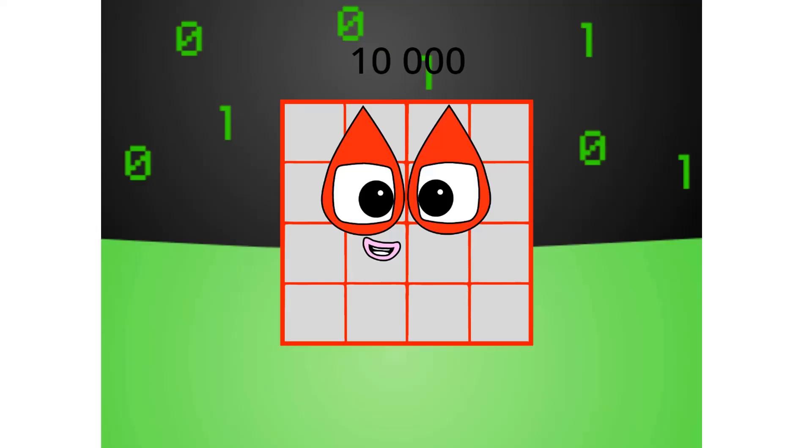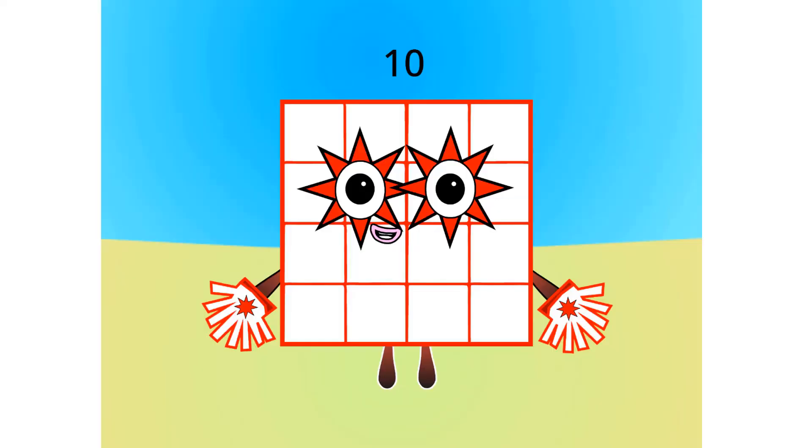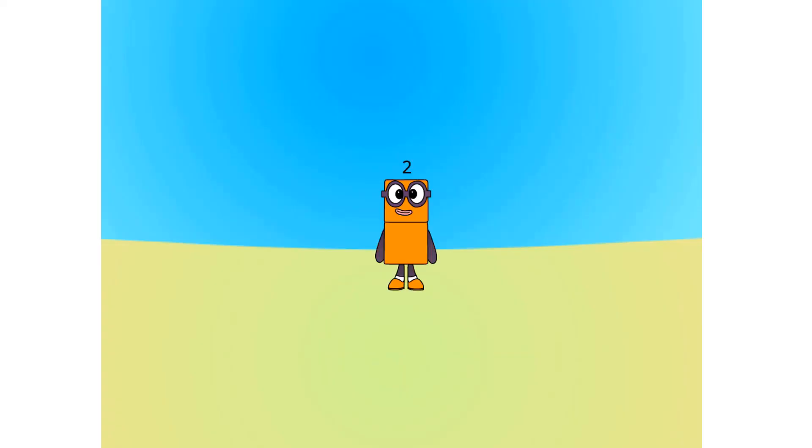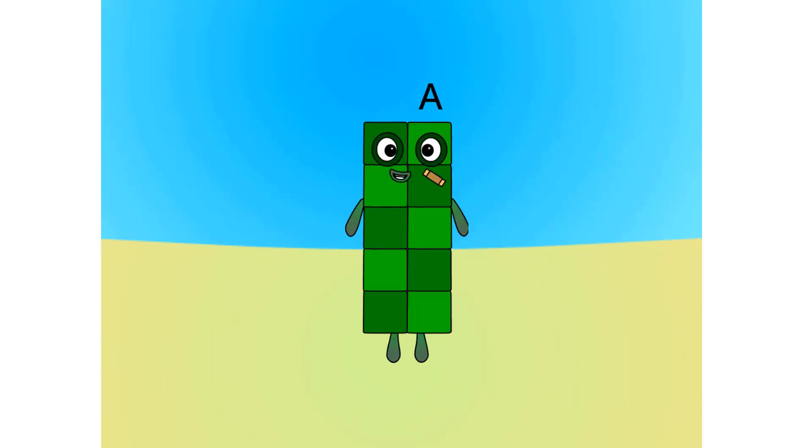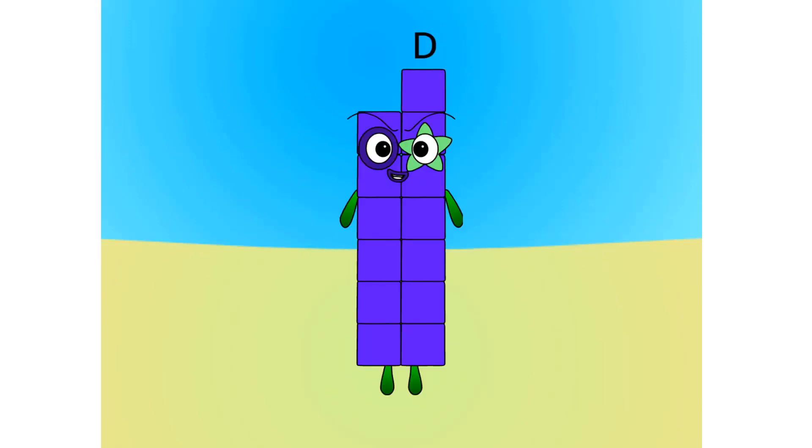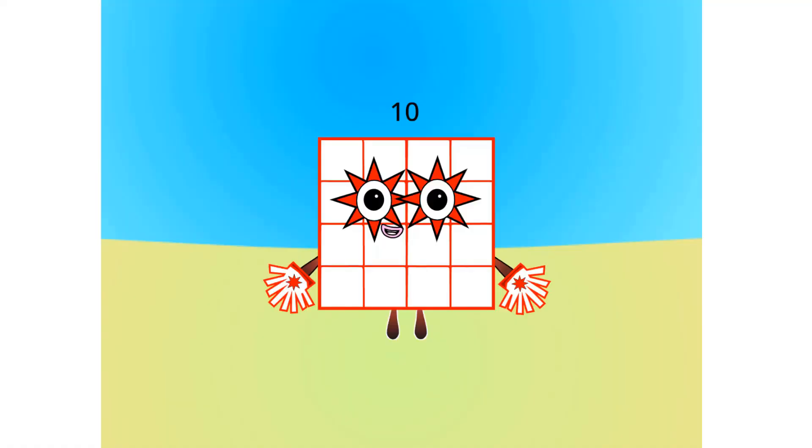Let's move on to the next base. This is base 16, also known as hexadecimal, or hex. If this is base 16, there needs to be 16 digits: 0, 1, 2, 3, 4, 5, 6, 7, 8, 9, A, B, C, D, E, F, 1, 0.